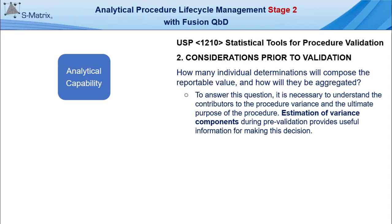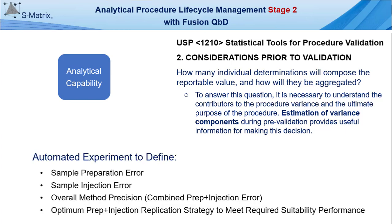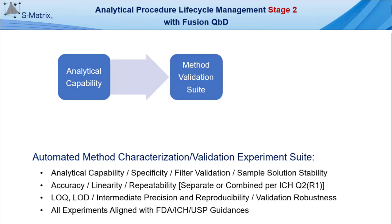Continuing with APLM stage 2, the analytical capability experiment within Fusion QBD's method validation module enables the user to quickly define the components of variation described in USP 1210, including sample preparation error, sample injection error, overall method precision, the combination of prep plus injection error, and the optimum prep plus injection replication strategy to meet required system suitability performance requirements.